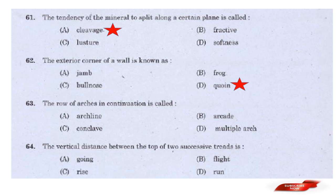Question: The row of arches in continuation is called — Answer: Option B — Arcade. The row of arches in continuation is called an Arcade.